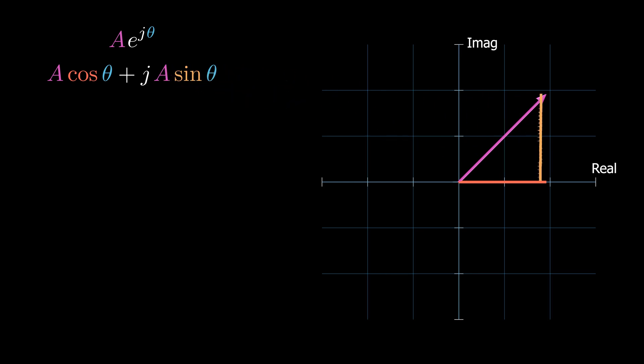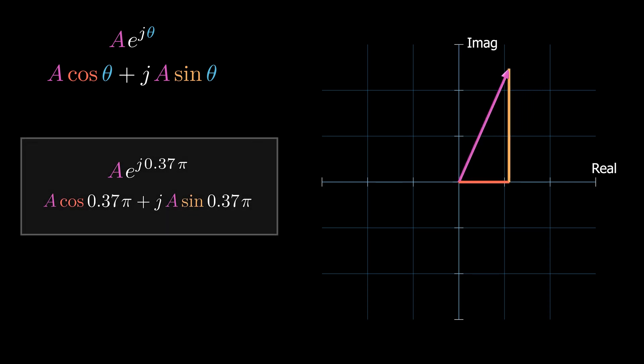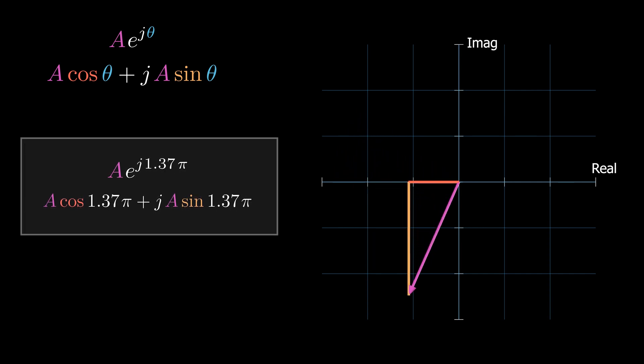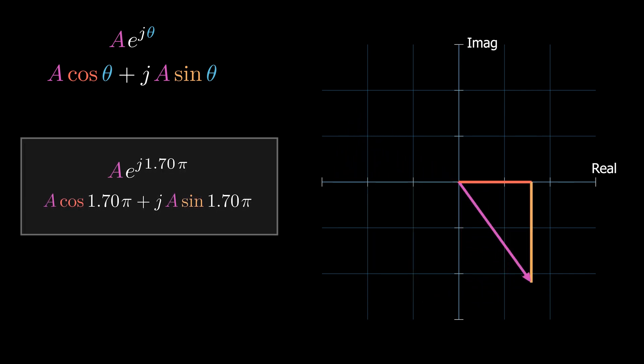The imaginary part is the projection of the magnitude on the imaginary axis and is equal to the magnitude times sine of theta. So the real and imaginary parts change as cosine and sine respectively as the phase changes.